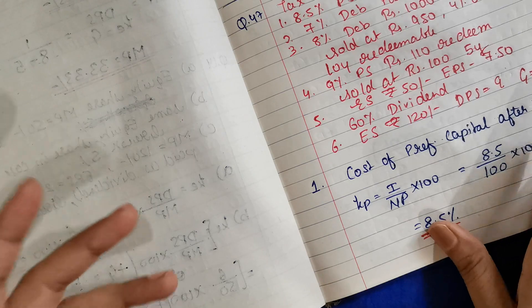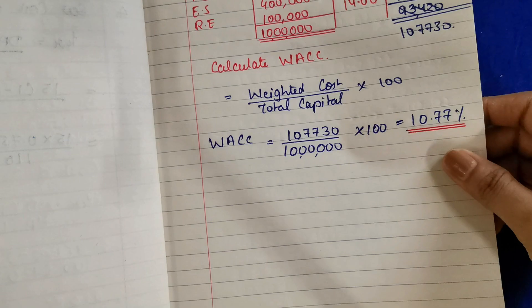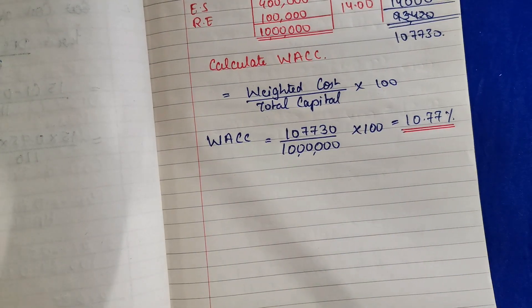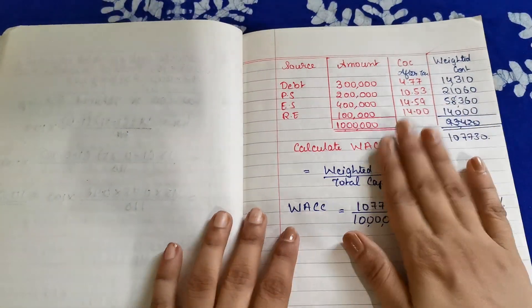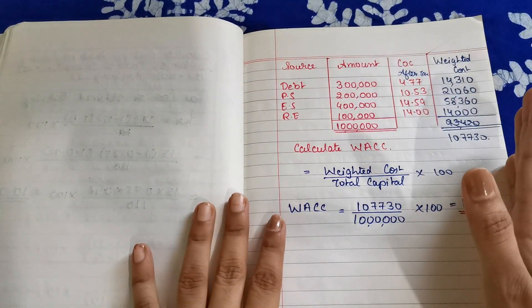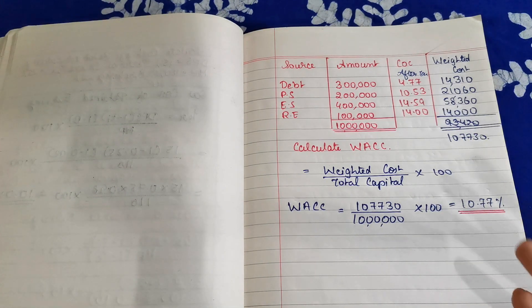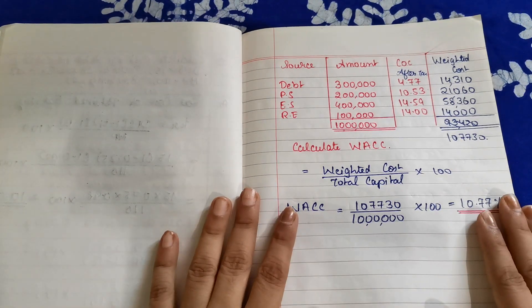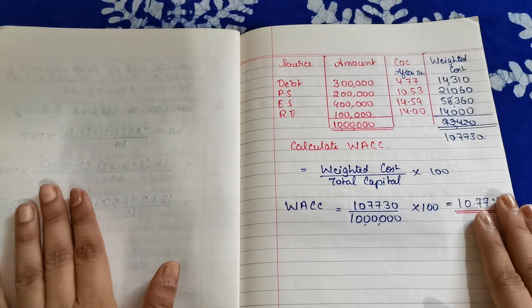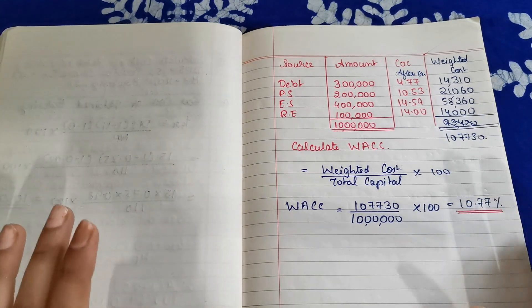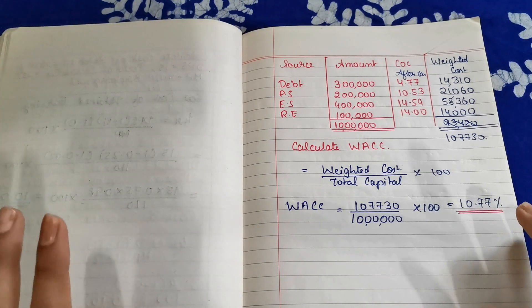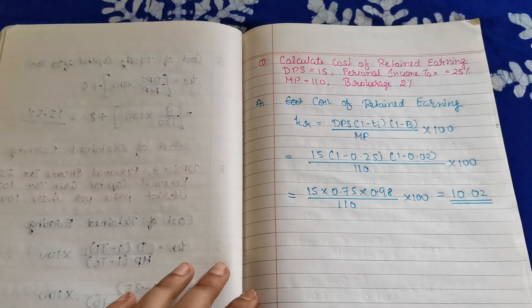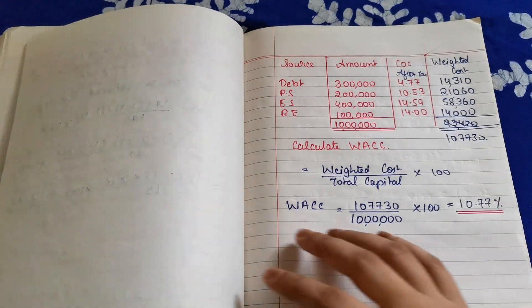In the last session we actually did weighted average cost of capital. Let me adjust the camera a bit. Yes, this is what we completed in the previous session — what we understand by weighted average cost of capital and how it is calculated. Today we are going to go further and calculate each and everything related to the weighted average cost of capital.